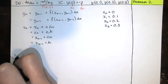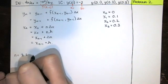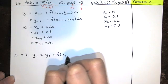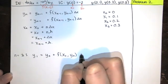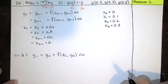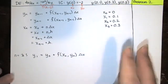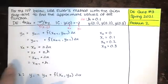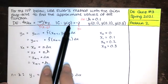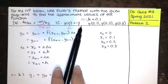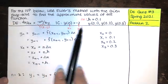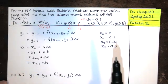When n equals 1, y sub 1 equals the last y value plus the slope at the last x-y pair times delta x. The reason this works is we're using a tangent line approximation. We know that the point x equals 0, y equals negative 2 is on the tangent line, and the slope of the tangent line at that location is given by the right-hand side of the differential equation.